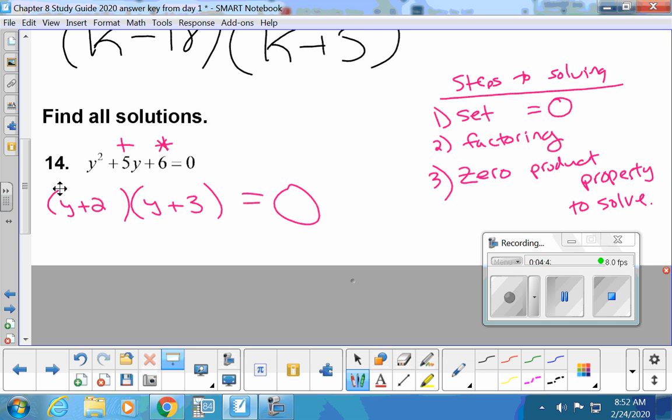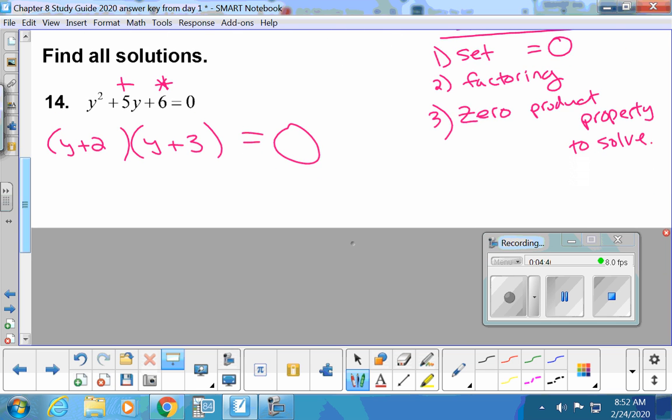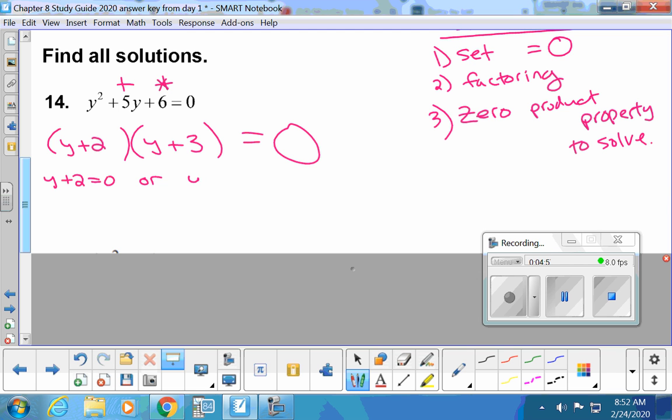So here's where we're at. The zero product property states if this binomial times this binomial equals zero, one of the two has to be zero. So either y plus 2 equals zero or y plus 3 equals zero. What do I do to solve this? Subtract 2. What do I do to solve this? Subtract 3. There's your two answers. You're normally going to have two answers. If you want to put a keyword between them, it's or. I don't grade your keyword being there.